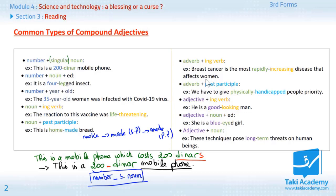Next one. Adverb plus ing verb. Example. Breast cancer is the most rapidly increasing disease that affects women. Rapidly is an adverb. Increasing is an ing verb. I remind you of what is an adverb here. An adverb is made up of an adjective, for example here, rapid, quick, plus ly. This is the thing that you add. Ly. Rapidly, quickly, etc.